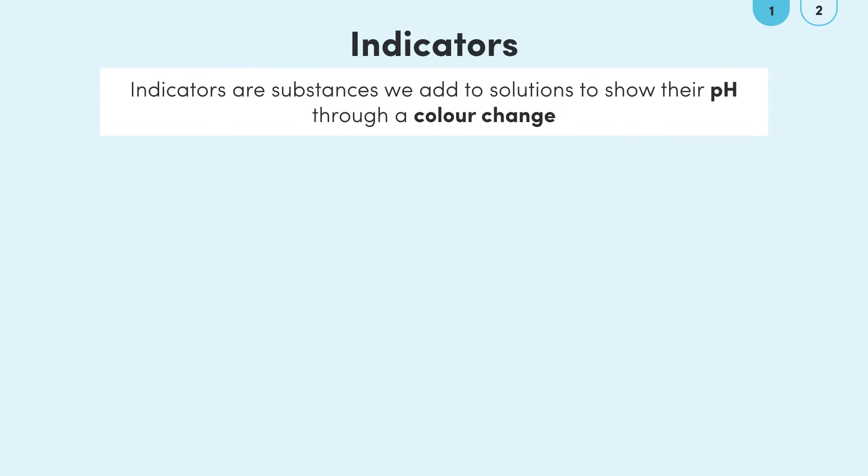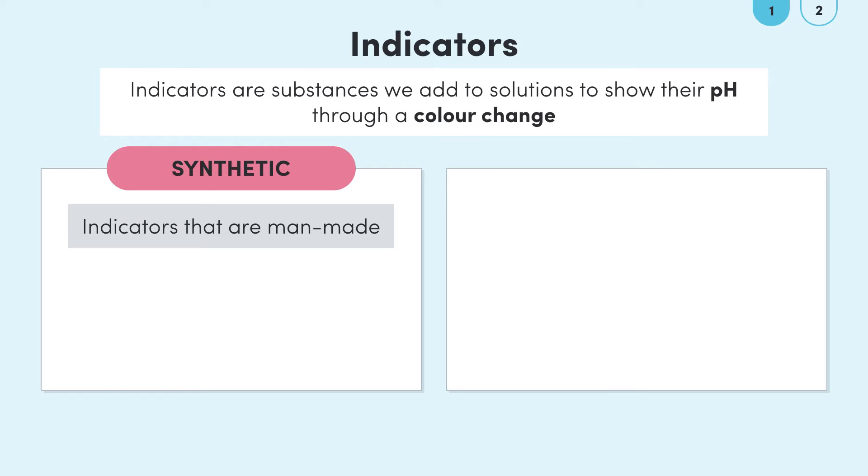Although there are many different types of indicators there are two broad categories of indicators. There are indicators that are man-made which we call synthetic indicators and there are also indicators that come from nature which are natural indicators.